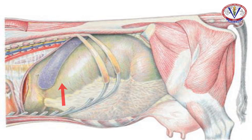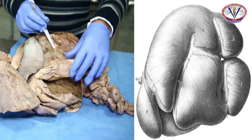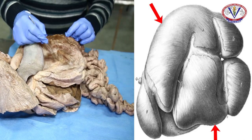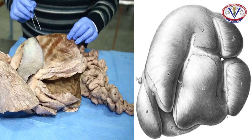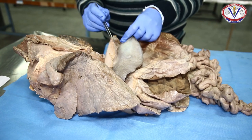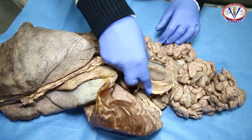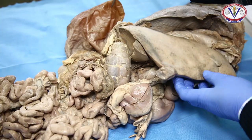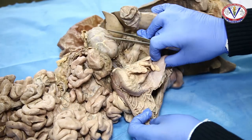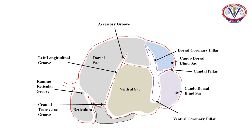The rumen occupies most of the left half of the abdomen and extends considerably over the median plane to the right side. It extends from the lower part of the 7th or 8th intercostal space to the pelvic inlet. The rumen presents two surfaces, two curvatures, and two extremities. The two surfaces are parietal and visceral. The parietal surface is convex and is related to the diaphragm, left wall of abdomen, floor of abdomen, and the spleen. The visceral surface is related to the left kidney, intestines, liver, omasum, and abomasum. The two surfaces are marked by right and left longitudinal grooves, dividing it into dorsal and ventral sacs.